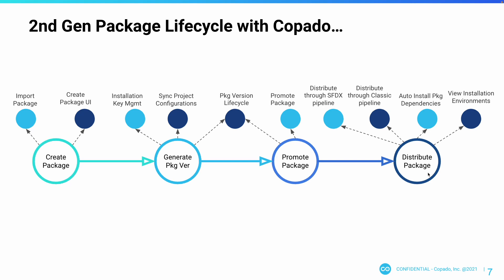Most importantly, Copado helps you distribute packages to multiple environments at once. You can either distribute a package through your Salesforce pipeline that you might be using within Copado, or you can distribute it to several environments at once. One of the best things Copado helps you with is managing dependencies. When you install a package into an org, Copado finds out its dependencies, first installs them into your target environment, and then proceeds to install your package so that your package installation does not fail. You can also view where your packages have been installed within Copado.